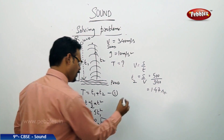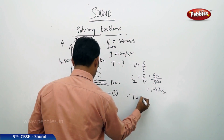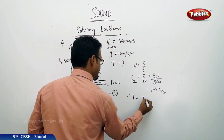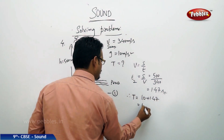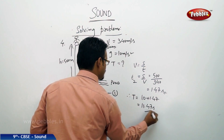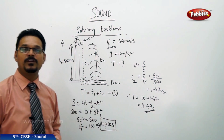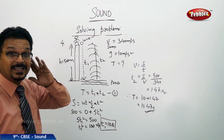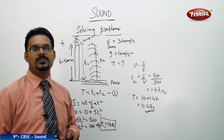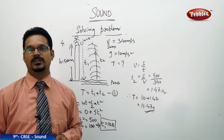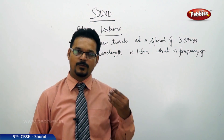Therefore, the total time T = t₁ + t₂ = 10 + 1.47 = 11.47 seconds. It takes 11.47 seconds to hear the sound produced by the stone hitting the surface of the water in the pond.